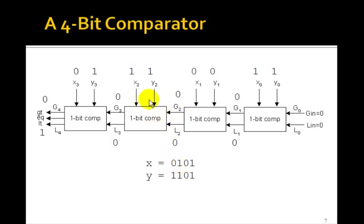Here, x2 and y2 are both 1. So again, the equal would have been 1 here, but the g3 and l3 are still 0.